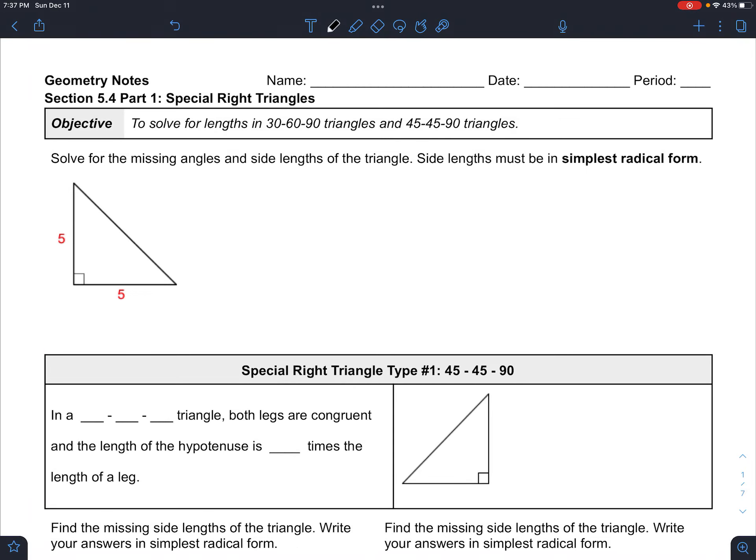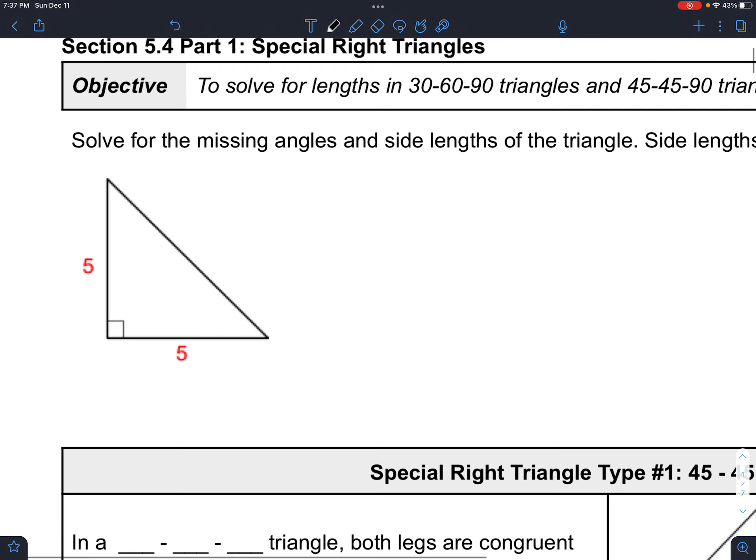So we have special right triangles to talk about today. Let's go ahead and derive some of the information about special right triangles by starting with this example. So this is an isosceles triangle, which means it has two equal sides. It's also a right triangle, so this one's very special.